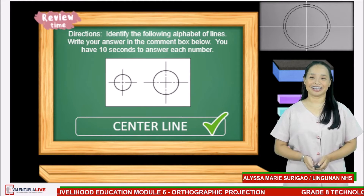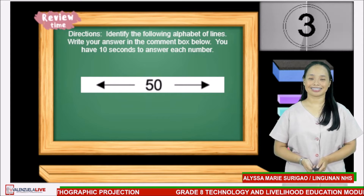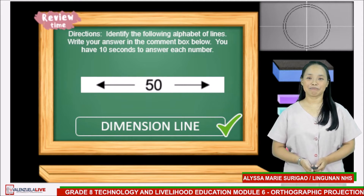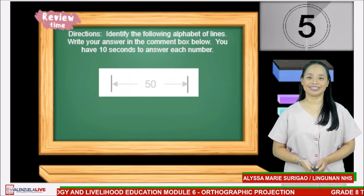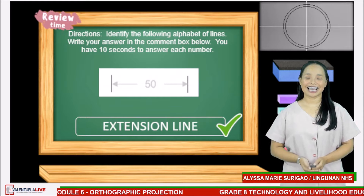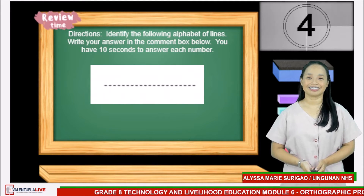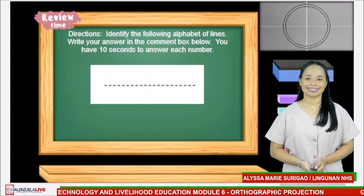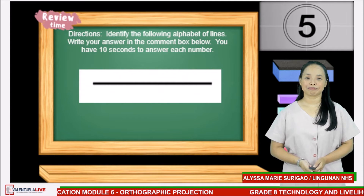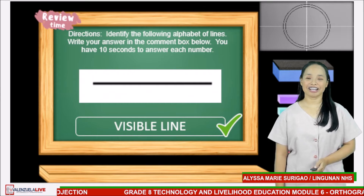The answer is center line. Number 2 — your timer starts now. Correct! The answer is dimension line. Number 3 — your timer starts now. Correct! The answer is extension line. Next — your timer starts now. The answer is hidden line. Number 6: the answer is visible line.